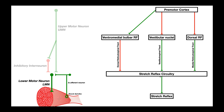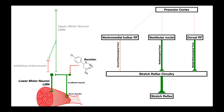That allows the ventromedial bulbar reticular formation to inhibit the stretch reflex, and it prevents the vestibular nuclei and dorsal reticular formation from activating it. The net effect is that the stretch reflex is inhibited, or at least kept at a minimum. But with an upper motor neuron lesion, these three descending inputs from the premotor cortex are gone — leading to less inhibition and excessive activation of the stretch reflex. The net effect is an exaggerated stretch reflex, and this leads us to talking about baclofen.